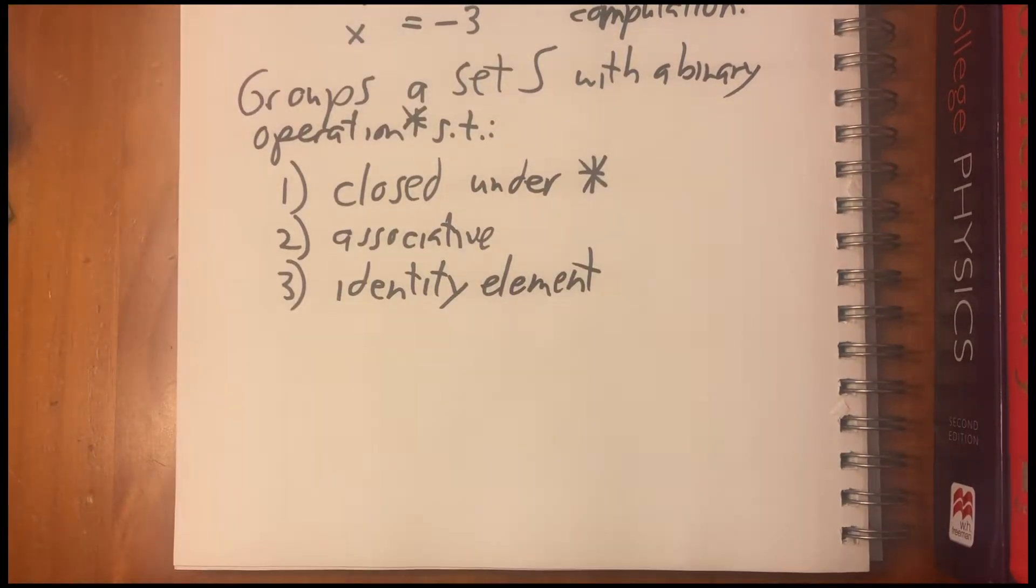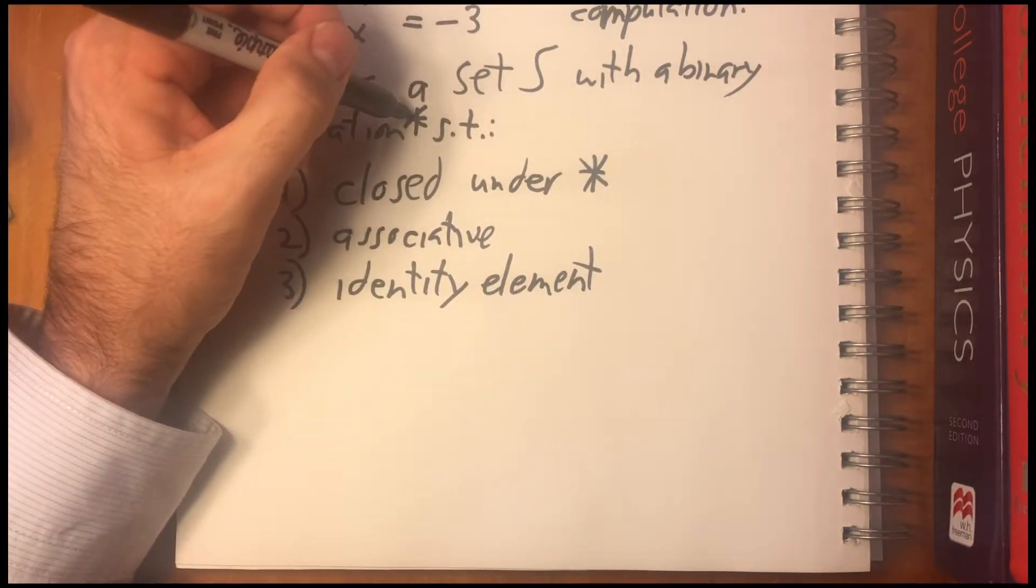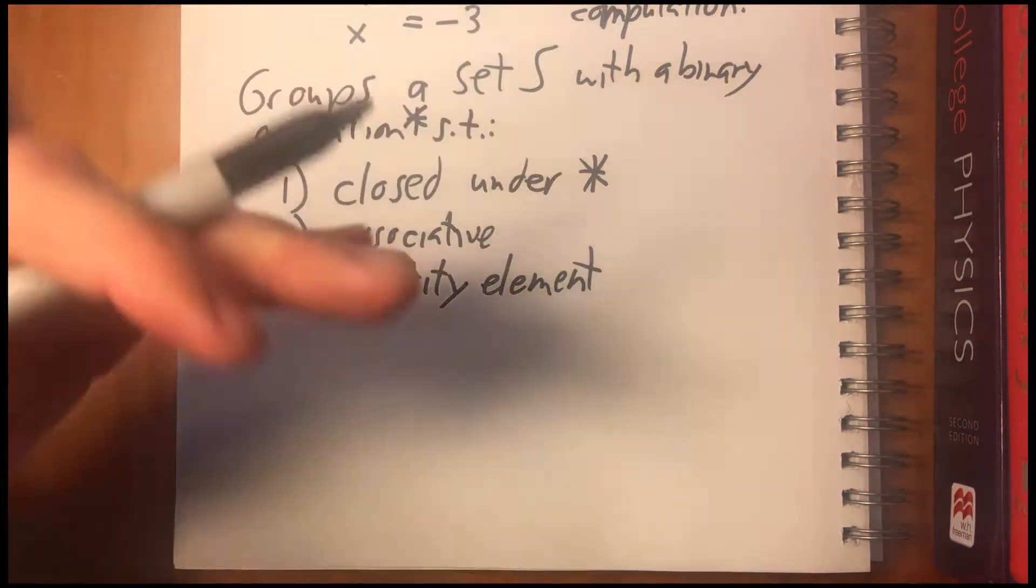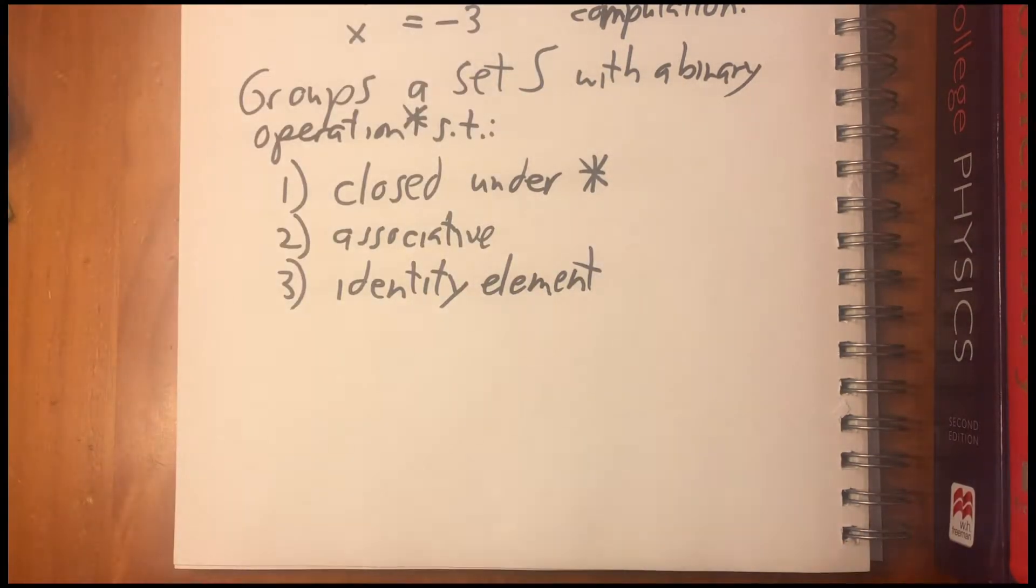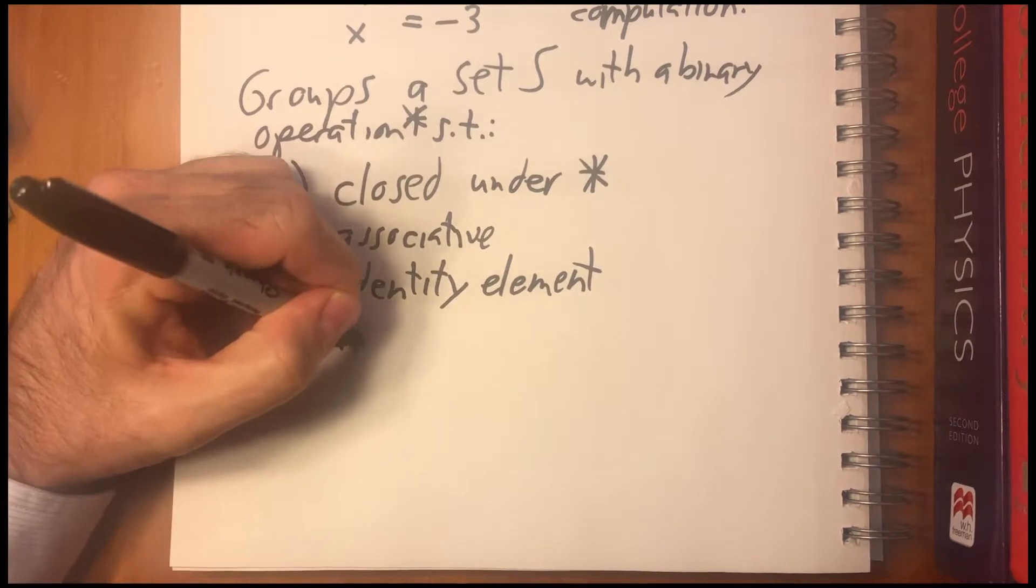So that means that there is an element in your set such that if you do the operation on any element in the set, you get back the same element. And four, each element has an inverse.